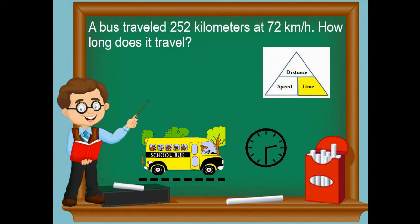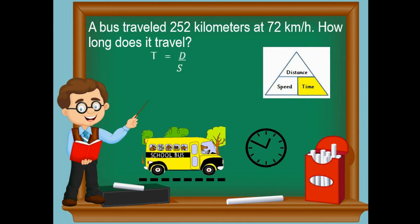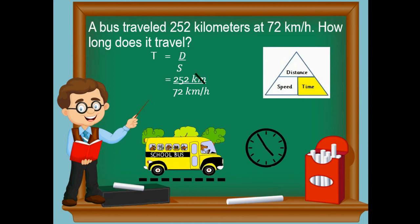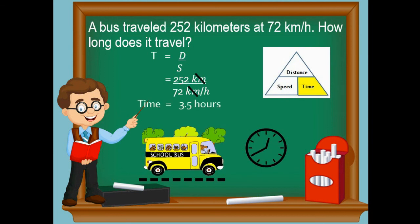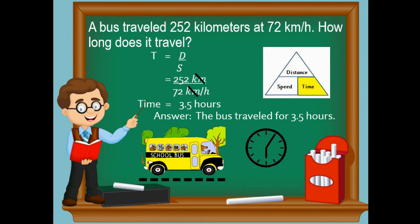Let's go back to our problem: a bus traveled 252 kilometers at 72 kilometers per hour — how long does it travel? We're looking for the value of time. Time equals distance divided by speed. Our distance is 252 kilometers and our speed is 72 kilometers per hour. 252 divided by 72 equals 3.5. Cancel the same unit of measurement — kilometers — and you will have hours left. So the final answer: the bus traveled for 3.5 hours.